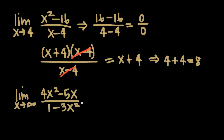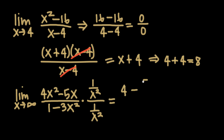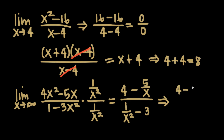If we take another example — the limit as x goes to infinity of 4x squared minus 5x divided by 1 minus 3x squared — this can be simplified by dividing both the numerator and denominator by x squared. After distributing 1 over x squared across both, we end up with 4 minus 5/x divided by 1/x² minus 3. Then as x goes to infinity, 5/x becomes 0 and 1/x² becomes 0, giving us 4 minus 0 over 0 minus 3, which simplifies to negative 4/3 as the value of the limit.